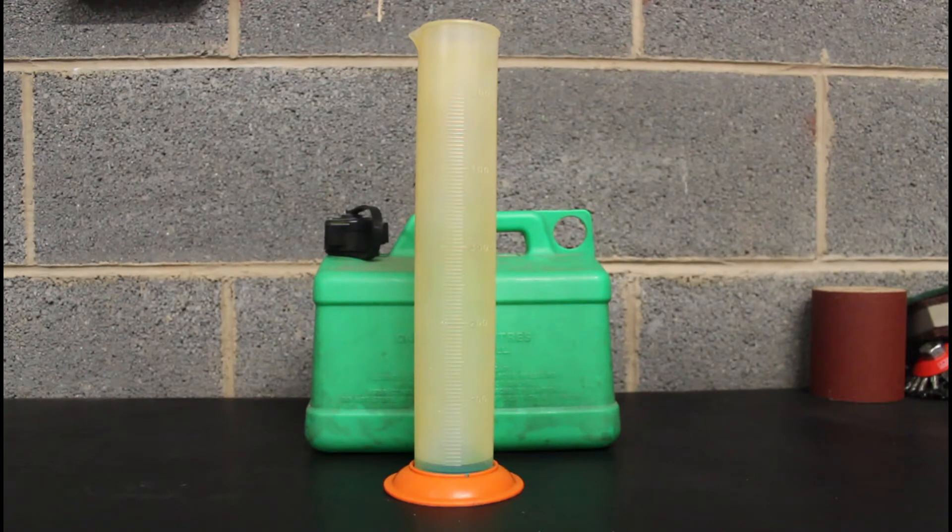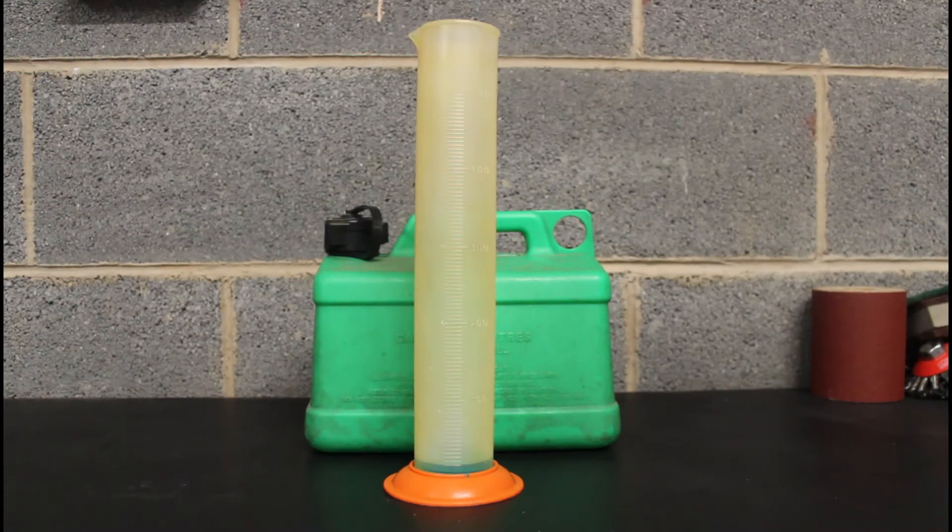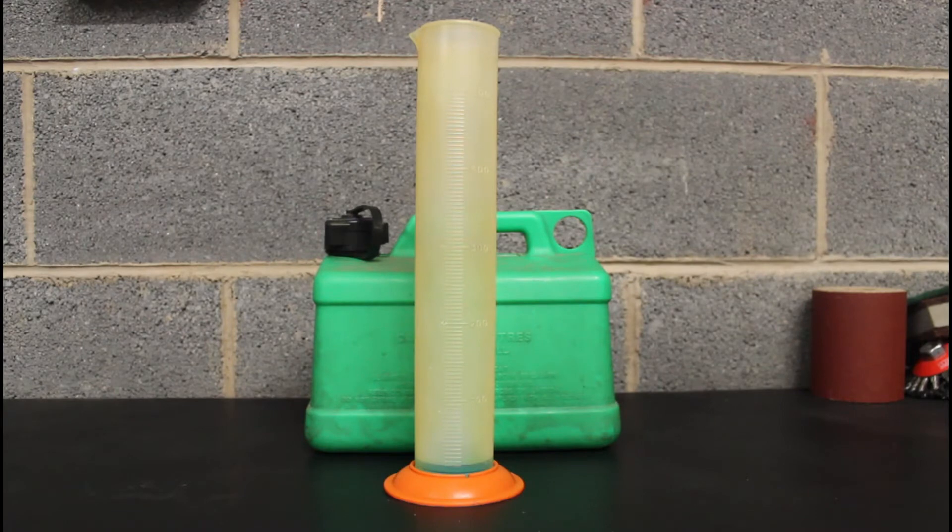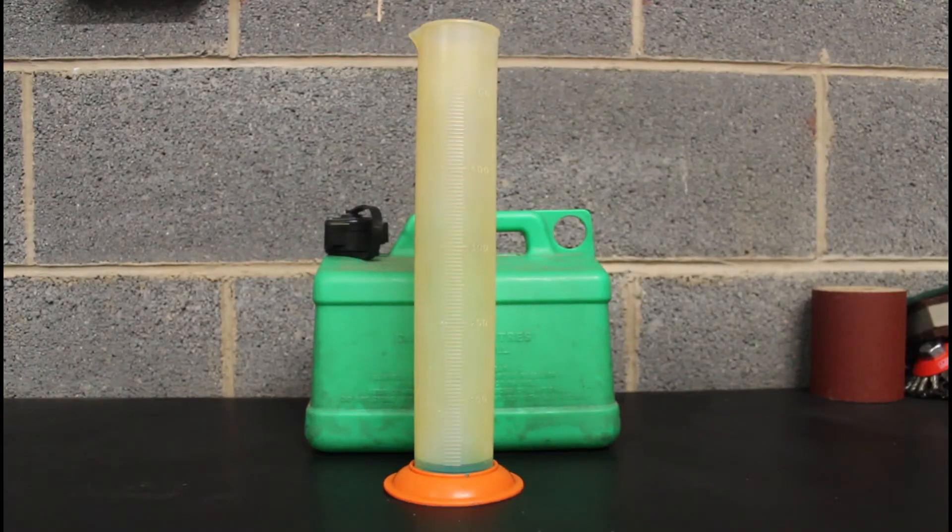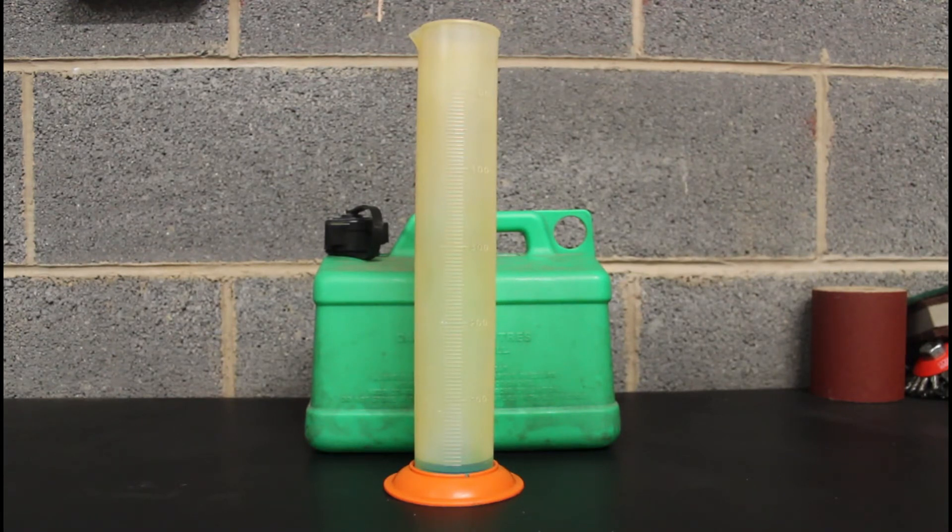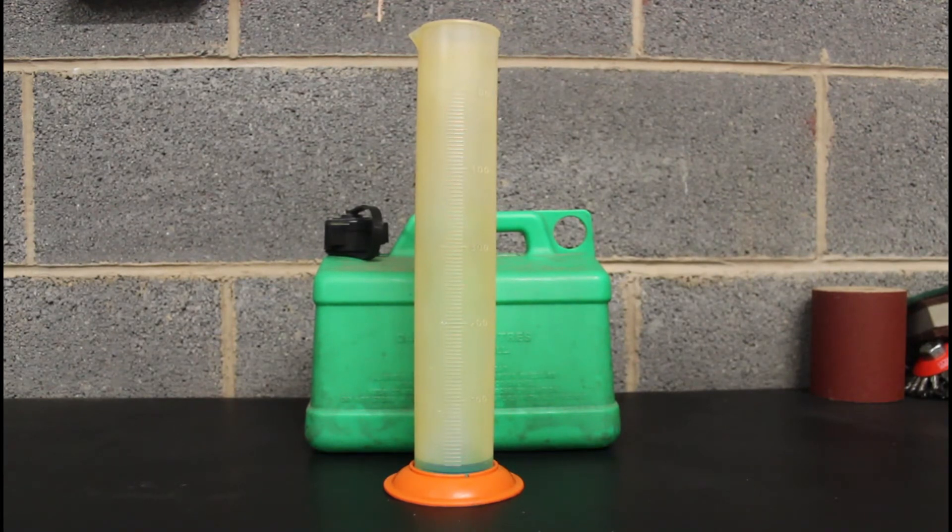So in that jug in front of you, that measuring jug, the water at the bottom is dyed blue and it's already at 20 mils of water. So I'm going to add 200 mils of fuel, give it a good shake, and see what's there.